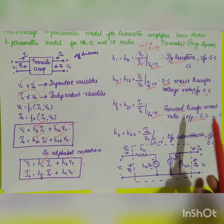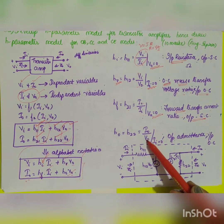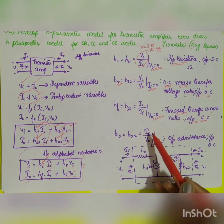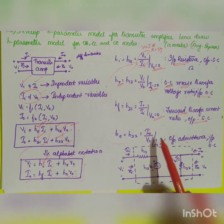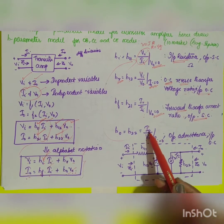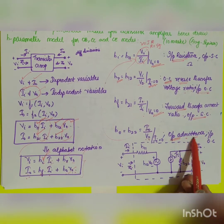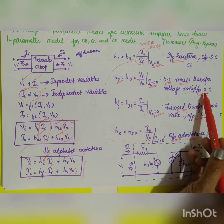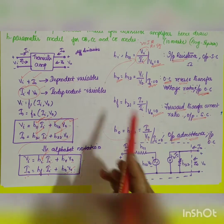ho = h22 = Iout/Vout with Ii = 0. This is I/V, which is admittance — both are output quantities, so it is called output admittance. The condition Ii = 0 means the input is open-circuited.